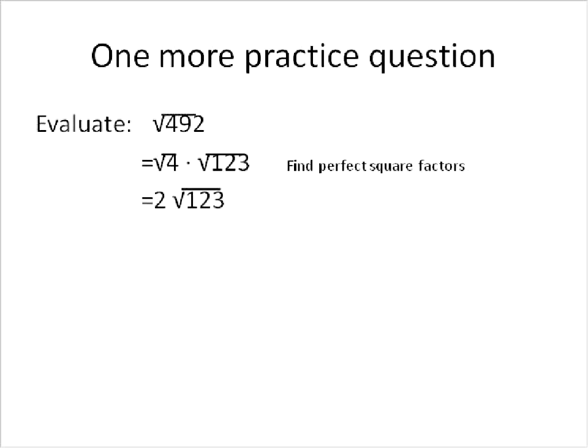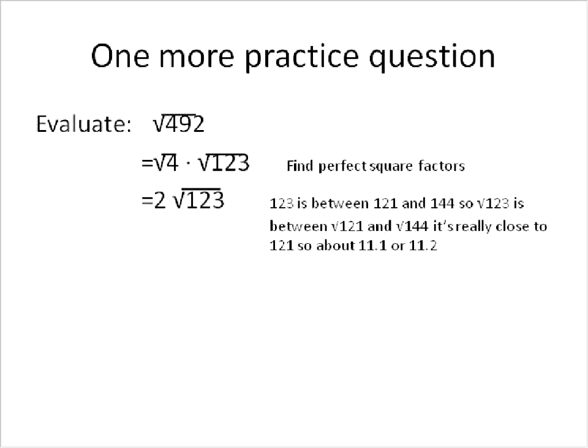From our original list, we could take the square root of 121 and the square root of 144. So those are our two perfect squares that are on either side of 123. One is less than and one is greater than. So because 123 is between 121 and 144, the square root of 123 is between the square root of 121 and 144.